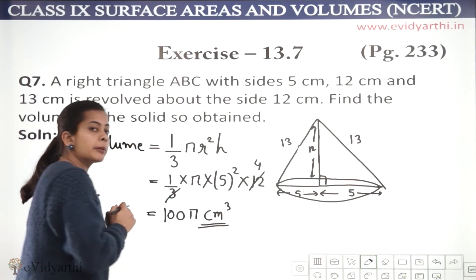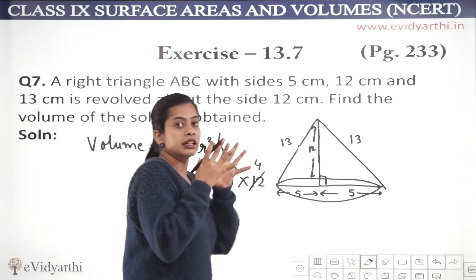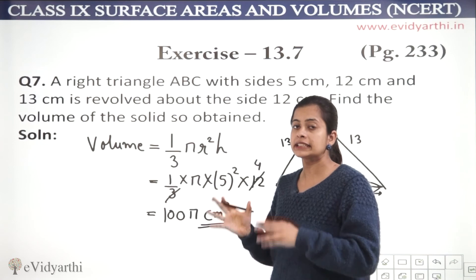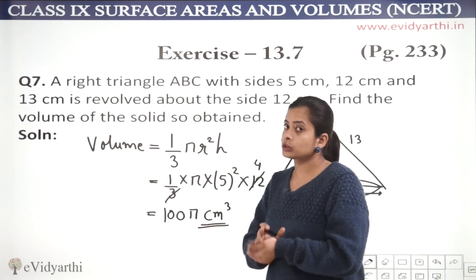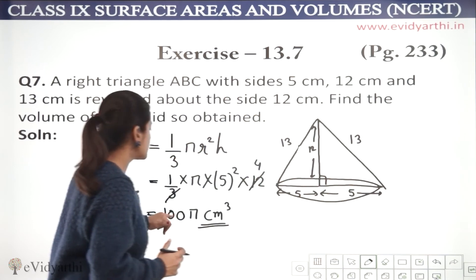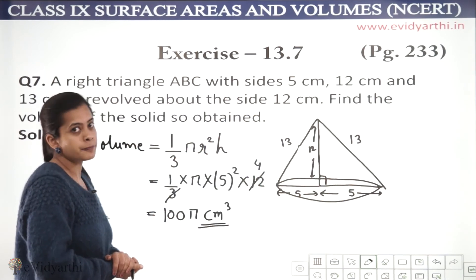Why? Because what we have here? We are finding the volume of the solid obtained. So, the solid is somewhat like a cone. And its volume is computed. That means cubic is the answer. Hence, the answer is 100π centimeter cube.